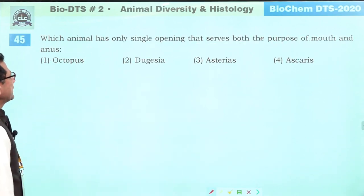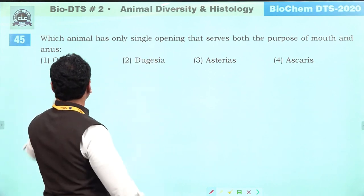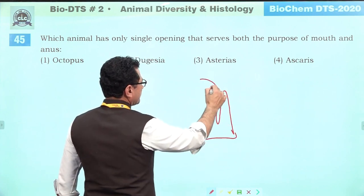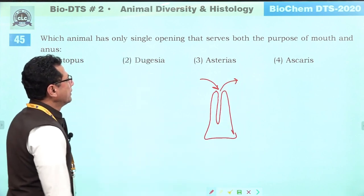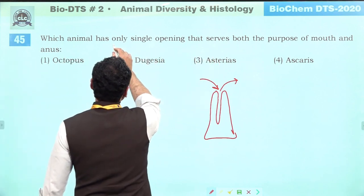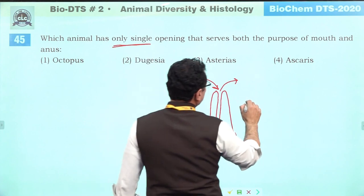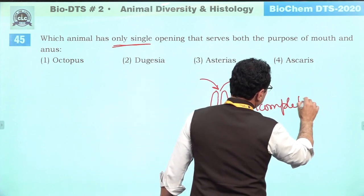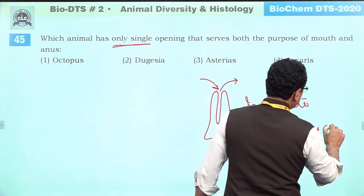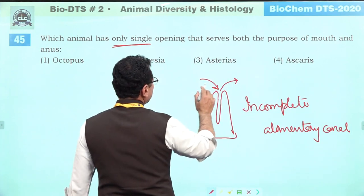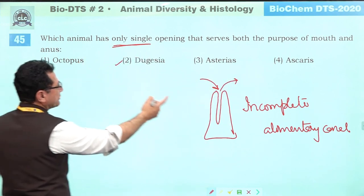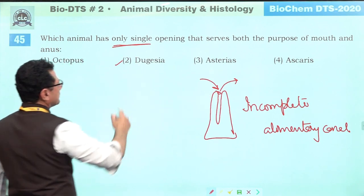Which animal has only a single opening that serves both as mouth and anus? This refers to animals with incomplete alimentary canal — the single opening serves both entry and exit. This is found in cnidarians. Answer is second.